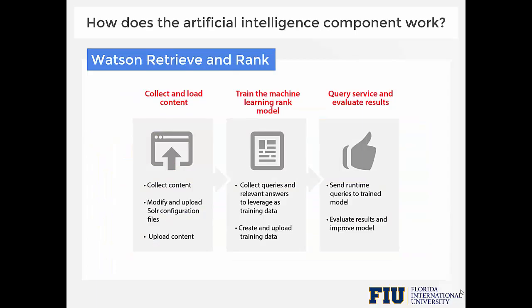So how does the artificial intelligence component work? We use the Retrieve and Rank service to do the indexing and ranking of our system. The Retrieve and Rank service combines Apache Solr for indexing and a machine learning ranker for ranking to provide more relevant legal answers automatically after the ranker has been well trained. First we upload the content, which are the legal documents. Then we create and upload the training data, which are the legal questions and answers. Finally, we evaluate the results and improve the model by improving the training data.